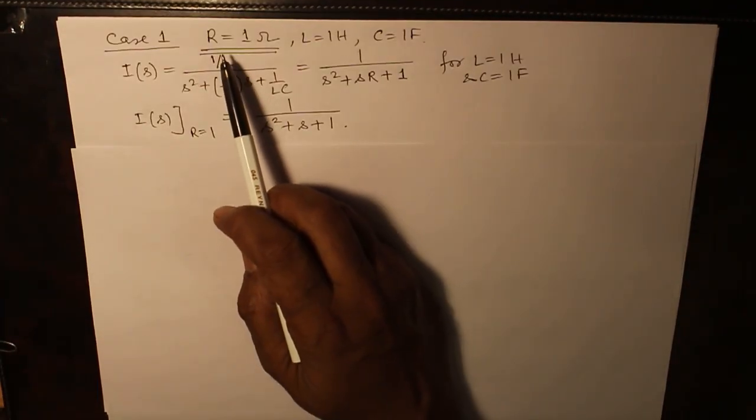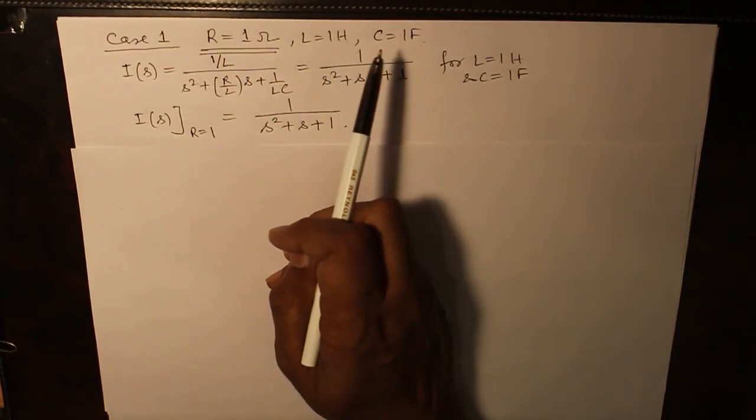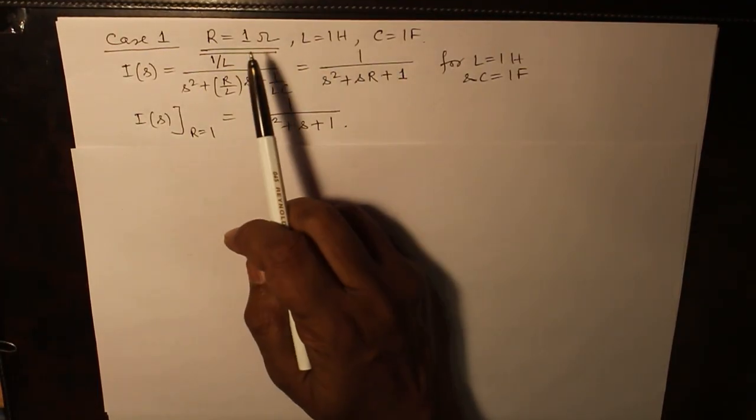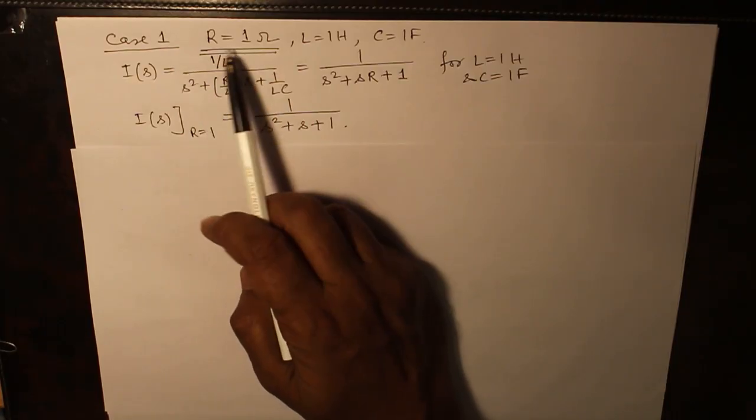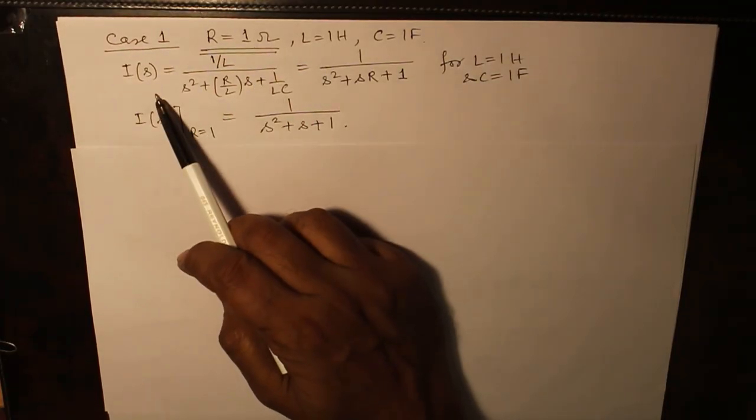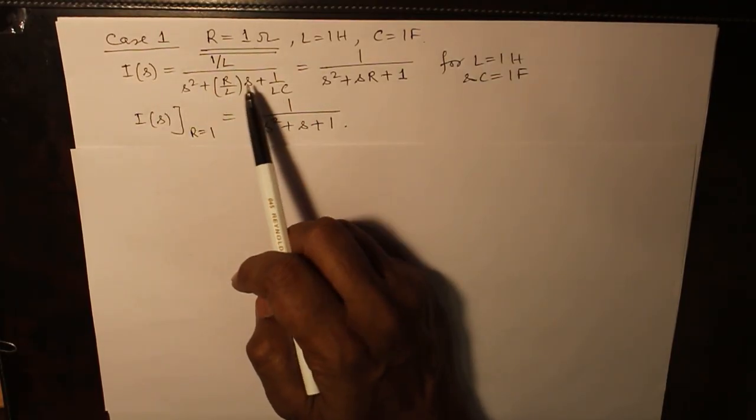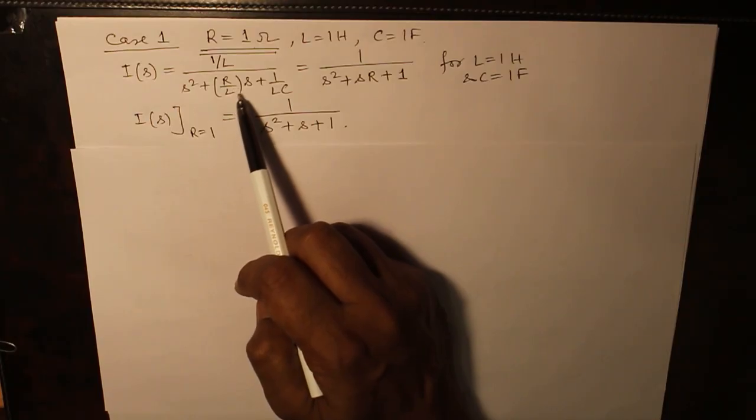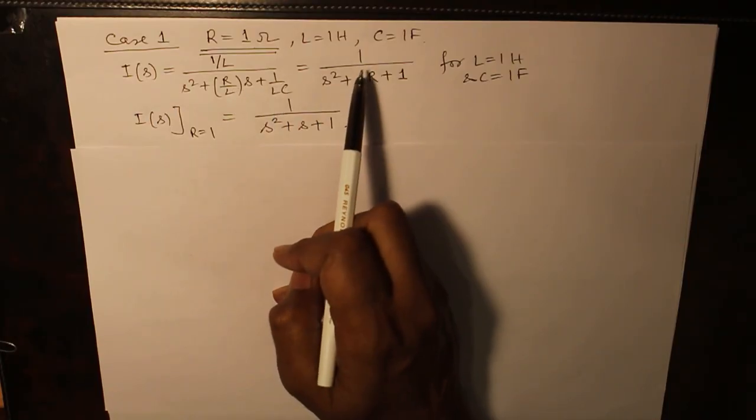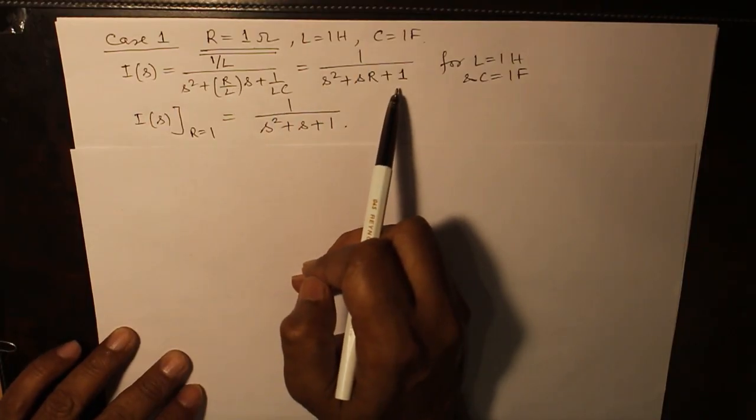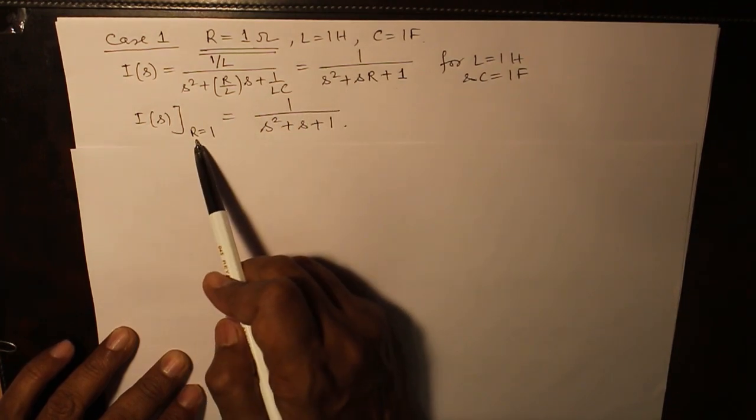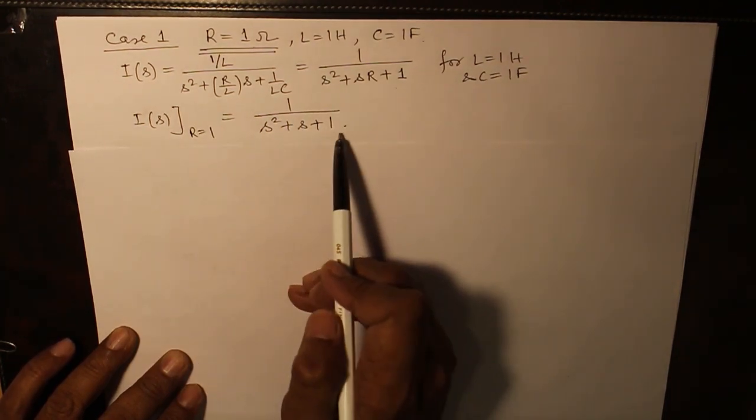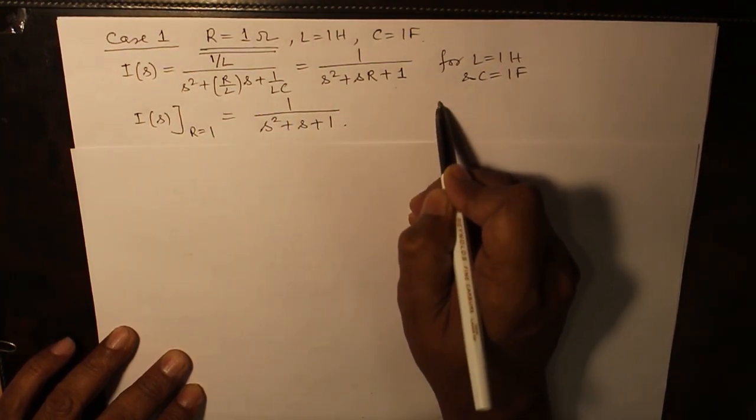In the equation, it is given inductance as 1 Henry, capacitors as 1 Farad and the resistance is varying. In case 1, resistance is 1 Ohm, so I(s) equals 1 over L divided by s² plus R/L into s plus 1 over LC, which becomes 1 over s² plus s*R plus 1. I(s) for R equals 1 becomes 1 over s² plus s plus 1, name it as 1.